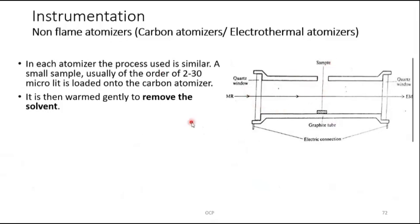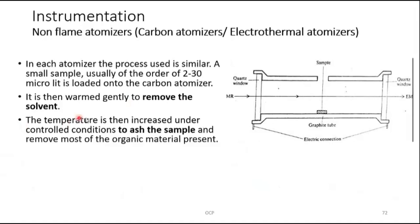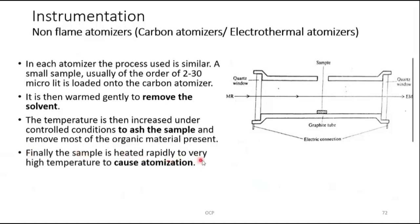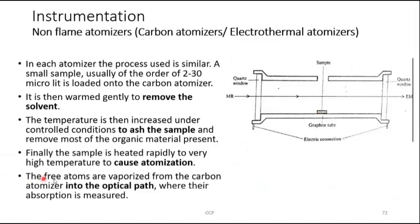The process: first, the sample is introduced. Second, it is warmed gently to remove the solvent, leaving behind the residue. Third, the temperature is increased under controlled conditions to ash the sample — converting it to ash and removing most organic material (carbon, hydrogen, oxygen). Finally, the sample is heated rapidly to very high temperature to cause atomization.